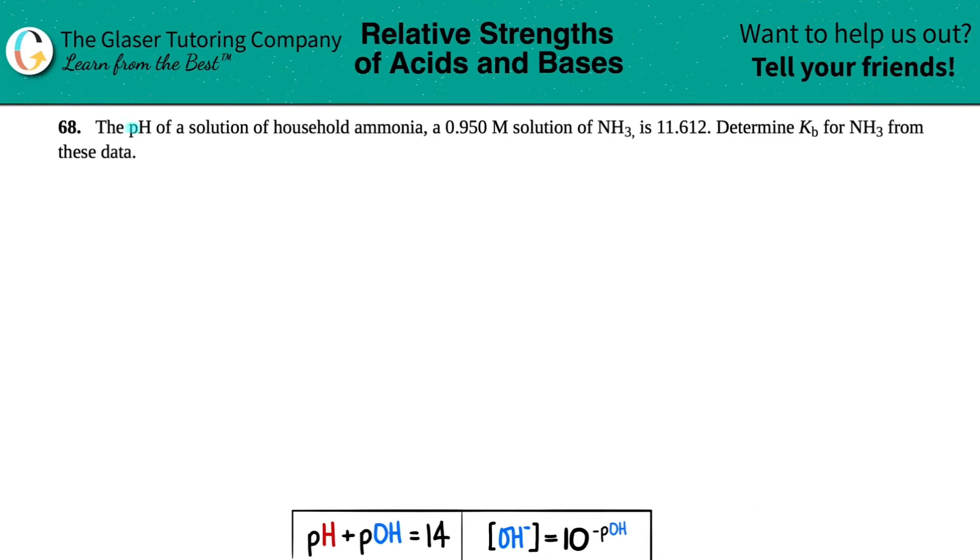Number 68, the pH of a solution of household ammonia, a 0.950 molar solution of NH3 is 11.612. Determine the Kb for NH3 from this data.